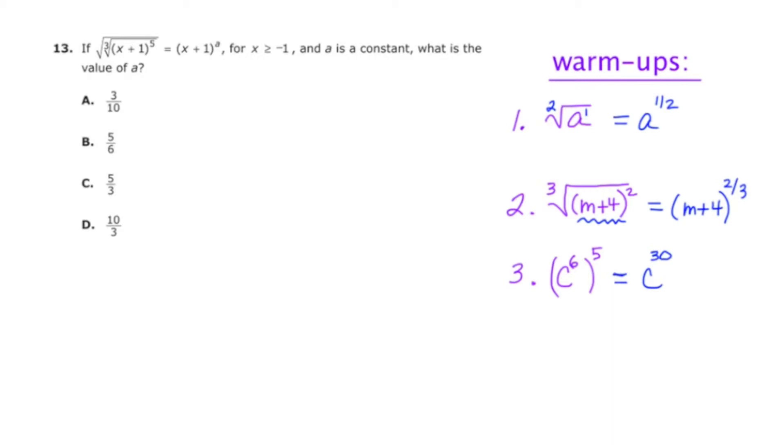Now what I notice is that there is this x plus 1 chunk present in both sides. So if I can manipulate the left-hand side so that it looks like the right-hand side, then I'll be able to do a mapping and figure out what a is mapped up with.